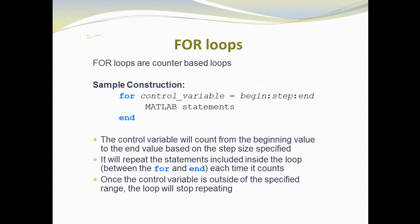You can specify a step size. If you don't specify a step, the increment is 1 by default. For example, writing 1 to 10 executes 10 times with step 1. If you specify a step of 2, the control variable takes values 1, 3, 5, 7, 9. The control variable counts from the beginning value to the end value based on the step size, and the statements inside the loop repeat each time it counts.